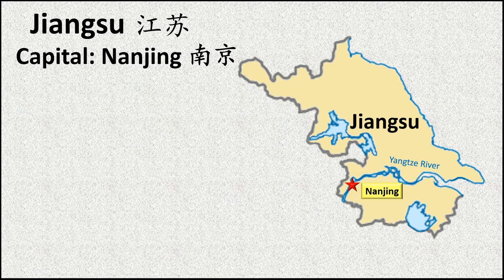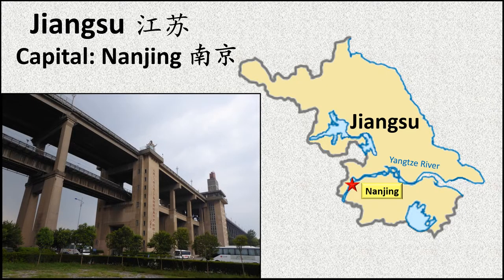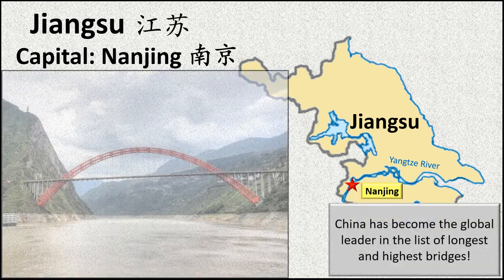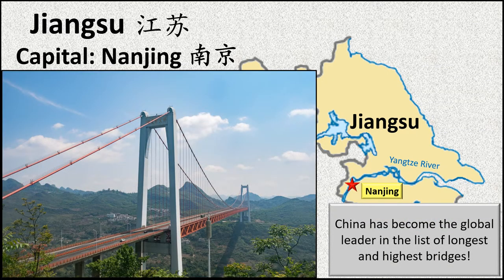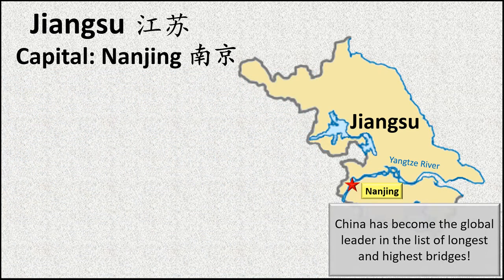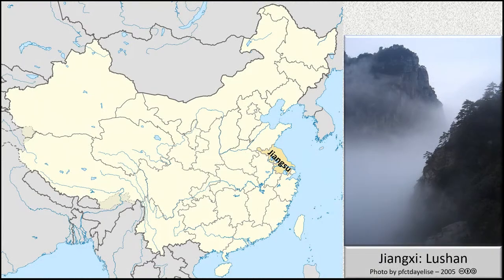In a previous video, we mentioned the first bridge to cross the lower reaches of the Yangtze in Wuhan. In Nanjing, we find another historic bridge. Completed in 1968, it was the first bridge across China's longest river built without foreign assistance. That was more than 50 years ago. Today, China is a world leader in engineering and bridge construction.